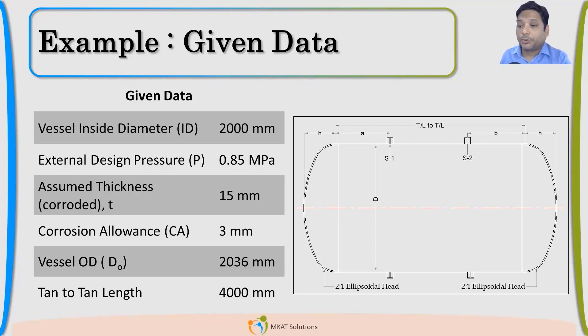This is the given data. ID 2000, external design pressure we are considering very high just for the case. Assumed thickness is 15 mm. We have discussed why this assumed thickness is 15 mm in our external pressure chapter UG 28. Corrosion allowance is 3, vessel OD we can calculate. If the thickness is 18 mm nominal, 2036 will be the OD and then tan to tan length. These are the given data.